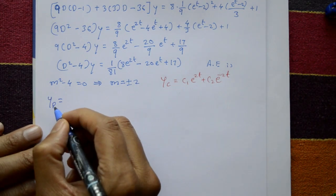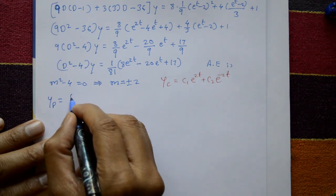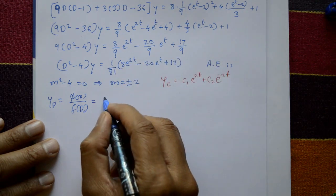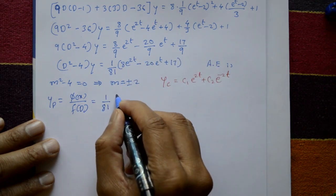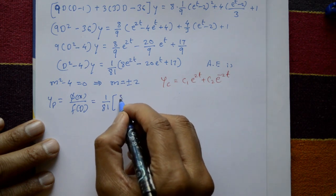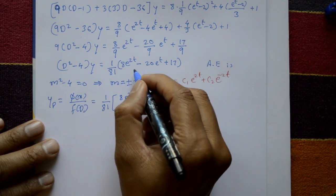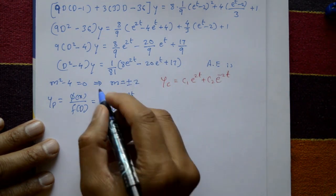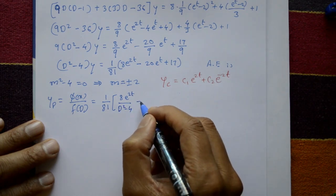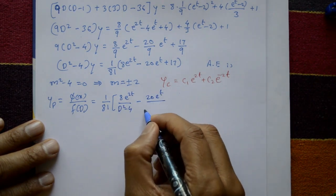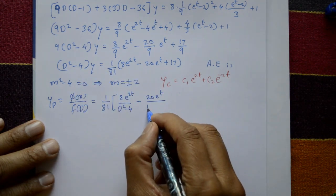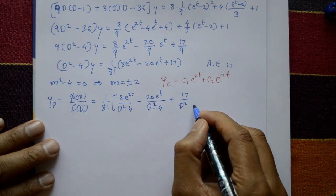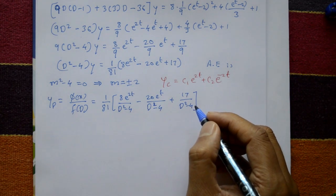Now the particular integral yp = φ(x) / f(D), where f(D) = D² - 4. The right-hand side is (1/81) times three terms. Separate into three terms: 8e^{2t}/(D²-4), minus 20e^t/(D²-4), plus 17/(D²-4). Each is Type 1 form e^{at}/f(D) where we substitute D = a.